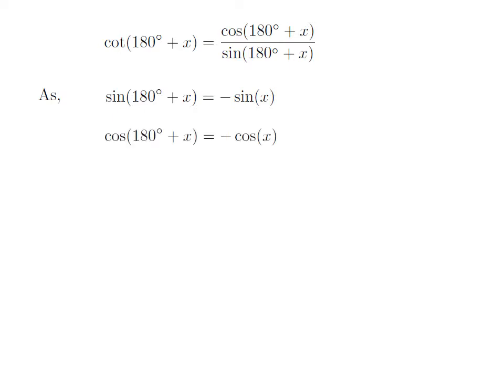We also know the trigonometry identity: cosine of (180° + x) is equal to minus cosine of x. The proof of this trigonometry identity has been explained in the video appearing in the upper right corner, and the URL has also been mentioned in the description section.